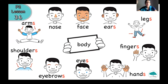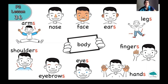Now I want you to read together with me our body parts words: arms, nose, face, ears, legs, fingers, hands, eyes, eyebrows, and shoulders. Very, very, very good. Excellent, P2! We remember so many words. Getting better and better all the time. I'm proud of you.